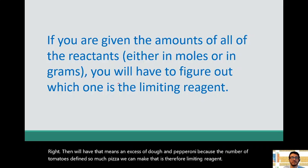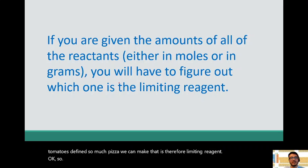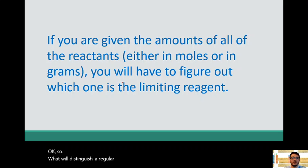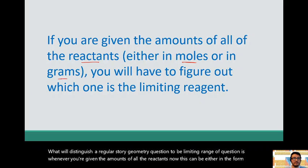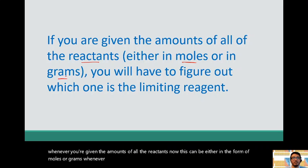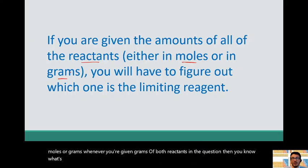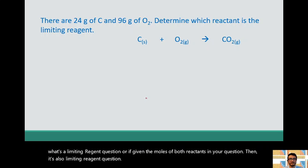Okay. So what will distinguish a regular stoichiometry question to a limiting reagent question is whenever you're given the amounts of all the reactants. Now this can be either in the form of moles or grams. Whenever you're given grams of both reactants in the question, then you know it's a limiting reagent question. Or if you're given the moles of both reactants in your question, then you know it's also a limiting reagent question.